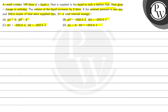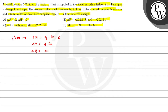Now we have to find out the value of ΔH and ΔU. Firstly, we will write what is given. Given data: 100 liters of liquid X. The volume of the liquid increases by 2 liters, so ΔV = 2 liters. Next, heat given is equal to change in enthalpy, so we can write Q = ΔH.